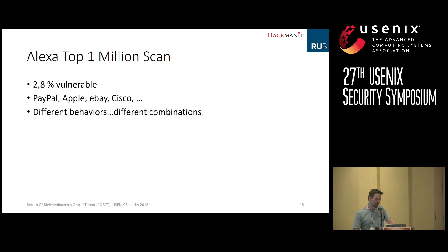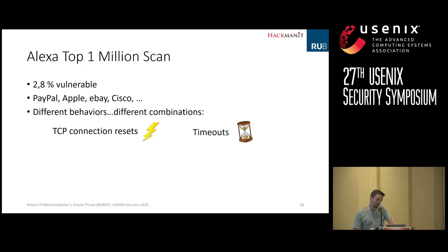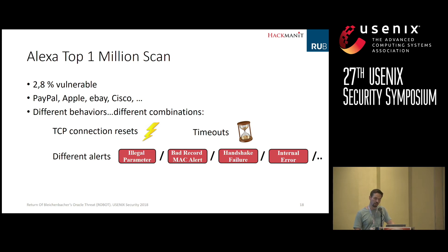We scanned only the Alexa top 1 million servers for performance reasons, wanting to cover the most important servers. We found that 2.8% of servers were vulnerable to this attack. This seems not that much, but most of the high-profile servers like PayPal, Apple, eBay, Cisco, and so on were vulnerable, which was quite surprising. From the scientific perspective, it was also very surprising that we saw different behaviors in different combinations — it was not only one vendor responsible, but there were different vendors, with different combinations of TCP connection resets or timeouts depending on the TLS protocol flow, with different alert messages like illegal parameter, bad record MAC, handshake failure, internal alert, and so on.